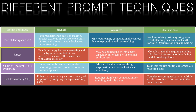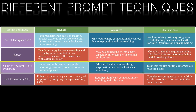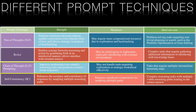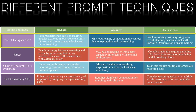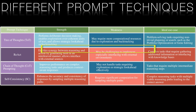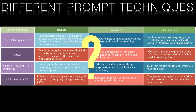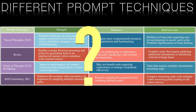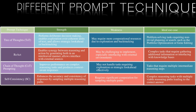ReAct prompts are your go-to when you need additional information from another document source or from the internet. But for logically stepping through a problem, chain of thought is easily your best bet. Tree of thoughts comes in handy when you need to explore multiple reasoning paths and backtrack when you hit a roadblock. How do you know beforehand which technique to use when designing your AI system? Wouldn't it be great if the AI could select the best prompt engineering approach itself? That's where prompt selection comes in.